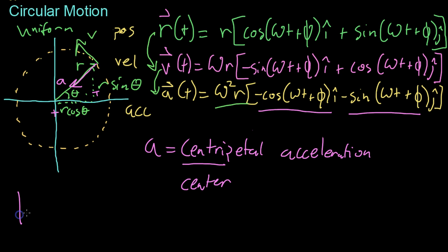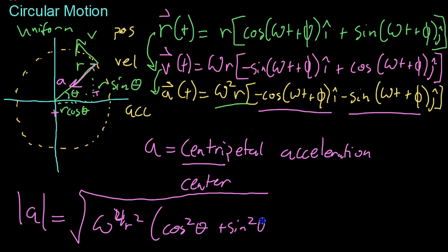And if you look at the strength of a, which you can find using the Pythagorean theorem, breaking this up into its constituent components, you get root omega to the fourth r squared cosine squared theta plus sine squared theta. We know from trig that cosine squared theta plus sine squared theta becomes one. So the size of a is simply omega squared r.